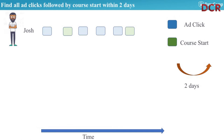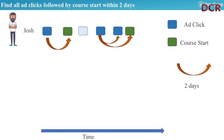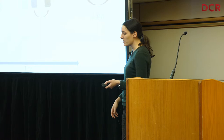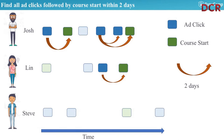Now if we change it and look at all ad clicks followed by a course start within two days: Josh has multiple conversions — he had an ad click followed by a course start, then two more ad clicks each followed by the same course start, so we draw both connecting lines. Lynn has just one connection. And Steve actually has none at all — his ad click is too far away from the course start.